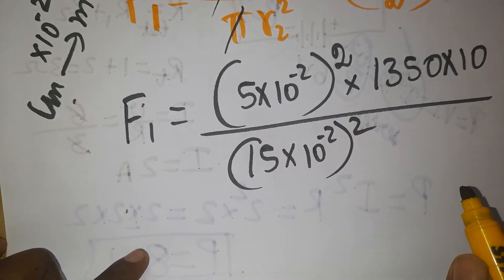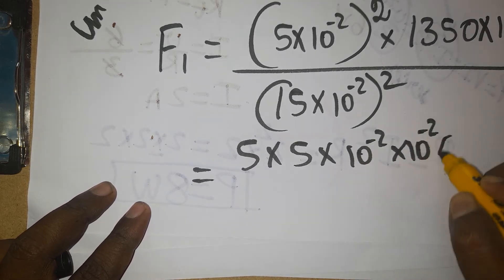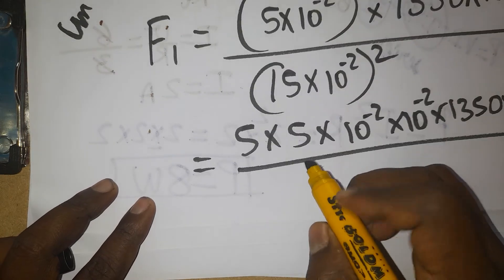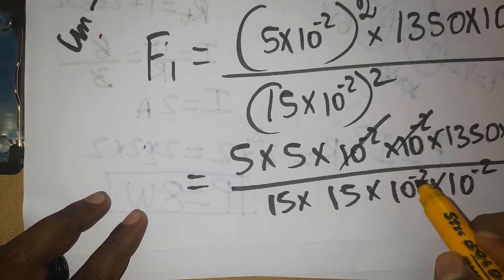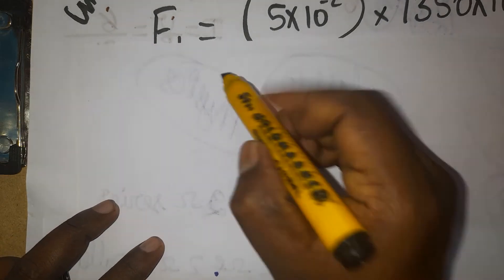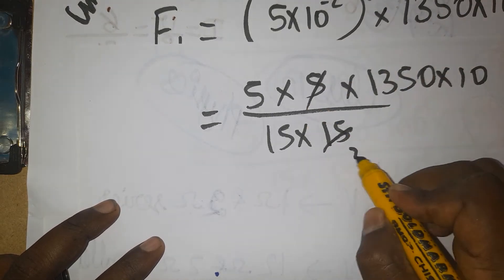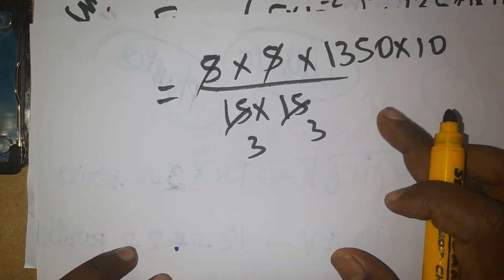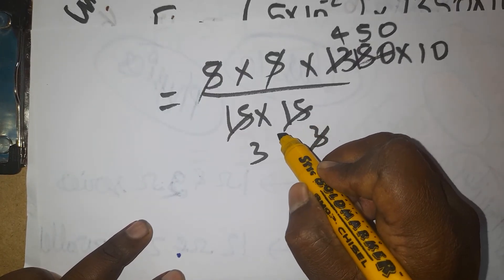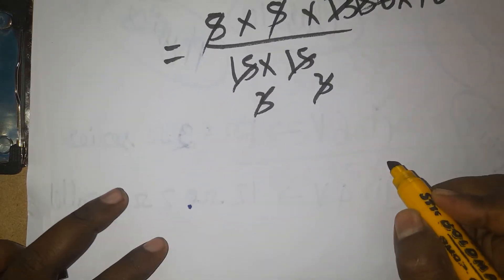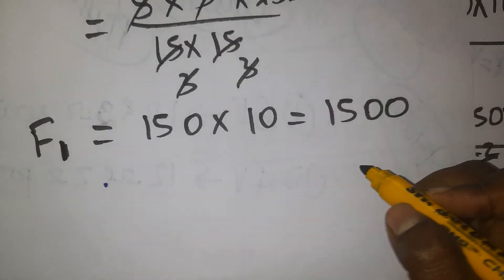We can write 5 × 10⁻² whole squared as 5² × 10⁻⁴, and similarly for 15 × 10⁻². The 10⁻² terms cancel. So the expression becomes: (5 × 5) / (15 × 15) × 1350 × 10. Cancelling common factors of 3, we get 5/5 giving 150 × 10 = 1500. So Force 1 = 1500 Newtons.